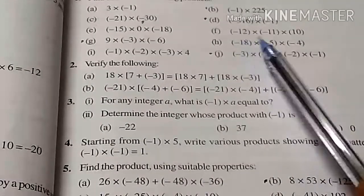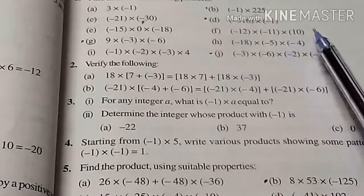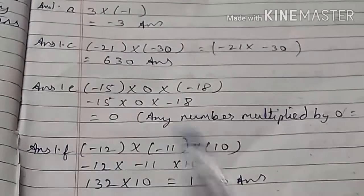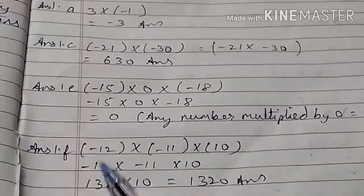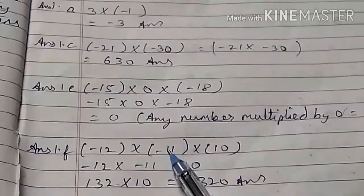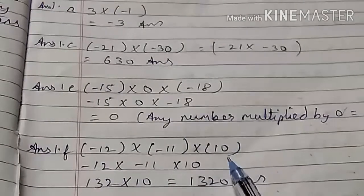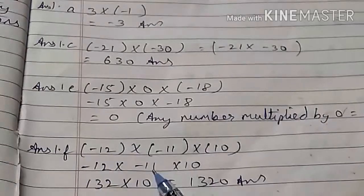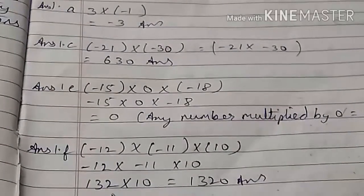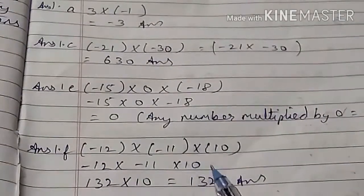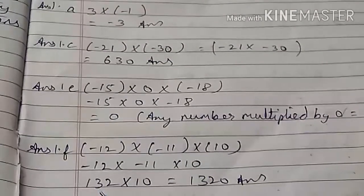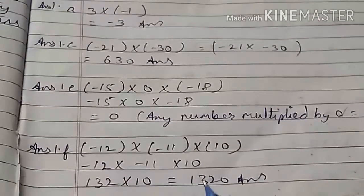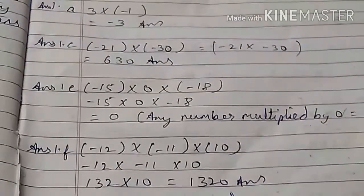Question number 1F: minus 12 multiply minus 11 multiply 10. We see that minus 12 and minus 11 are negative integers and 10 is a positive integer. So minus 12 multiply minus 11 gives 132. When multiplied again by 10, the answer will be 1320.